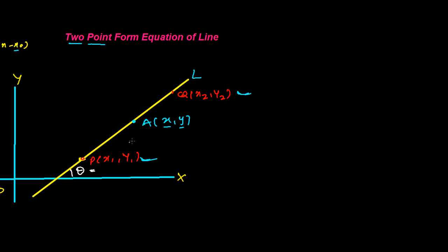If the inclination of line L is theta, then tan of the angle — which we call slope — will be M. Since AP has the same inclination theta, its slope is M. Similarly, AQ has inclination theta, so its slope is M, and PQ also has inclination theta, so slope is M. Every line segment has the same slope.